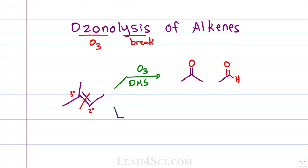The next type of reaction once again starts with ozone, but this time we follow up with oxidative conditions such as H2O2 (hydrogen peroxide). In this case you'll get the same types of products — the tertiary becomes a secondary carbon and therefore a ketone — but the aldehyde will be oxidized, giving you a carboxylic acid instead.